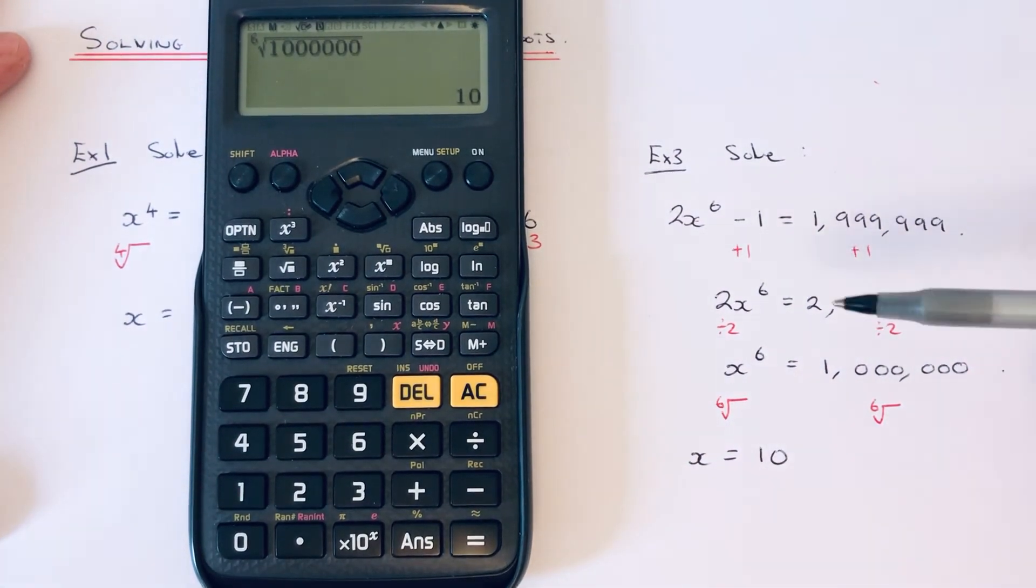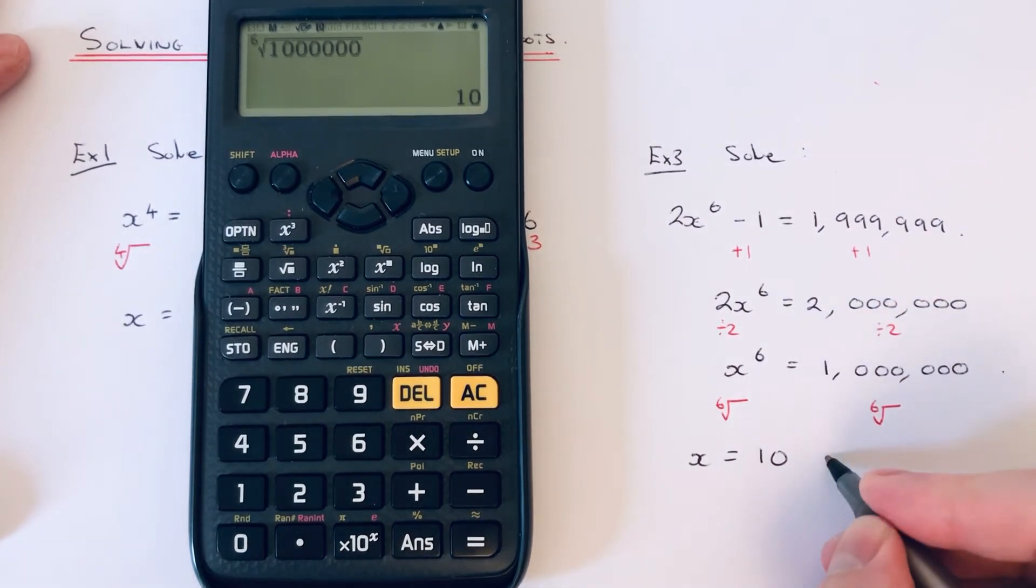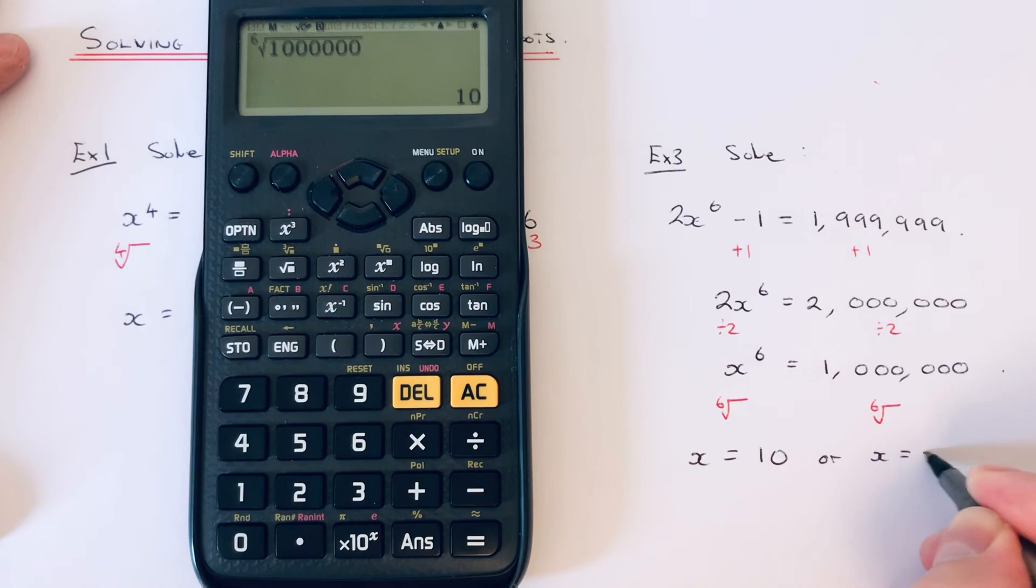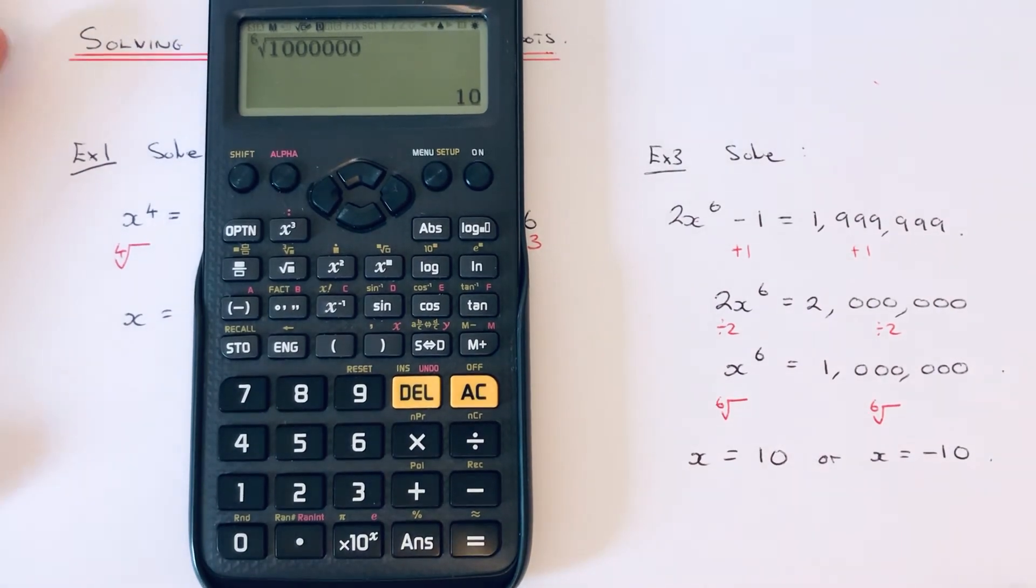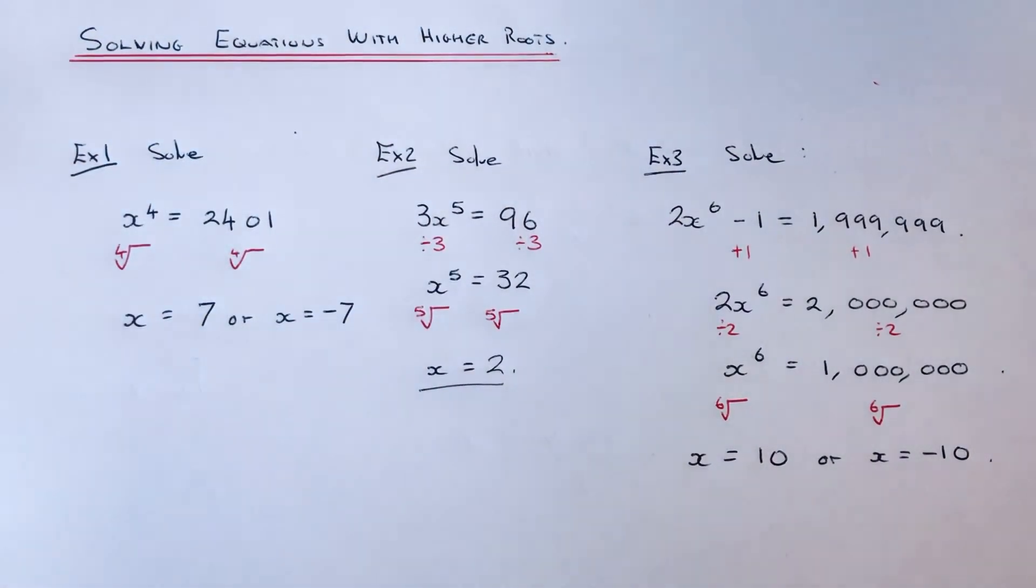Remember from example 1, if we have an even number power, we have two solutions. So we can also have negative 10. I hope you liked this video. If you did, like and subscribe. Thanks for watching guys, bye!